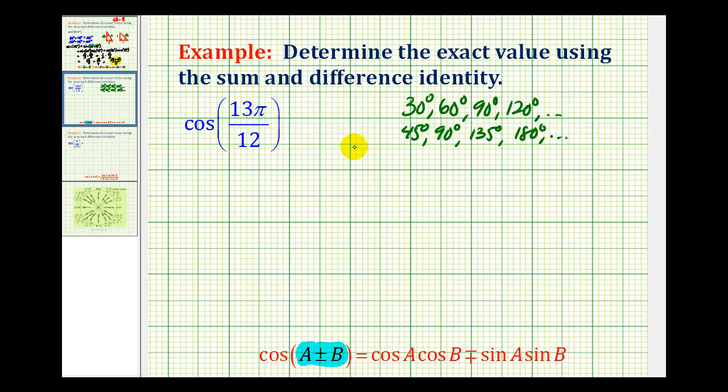And it's much easier to determine what two angles to add or subtract if we first convert this to degrees. So let's start by doing that. Multiply by 180 degrees divided by π. The π's simplify out, 12 and 180 simplify, so 13 times 15 degrees equals 195 degrees.